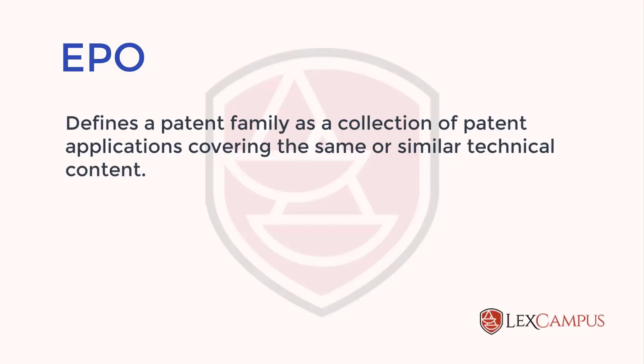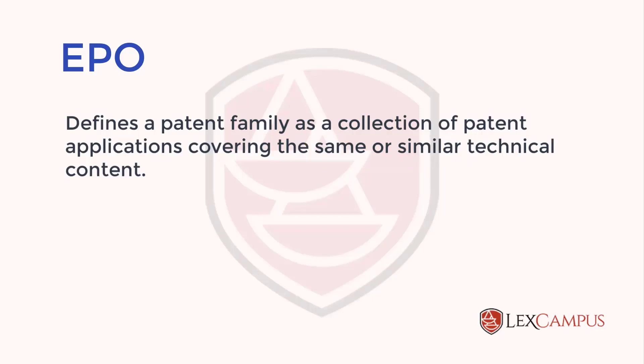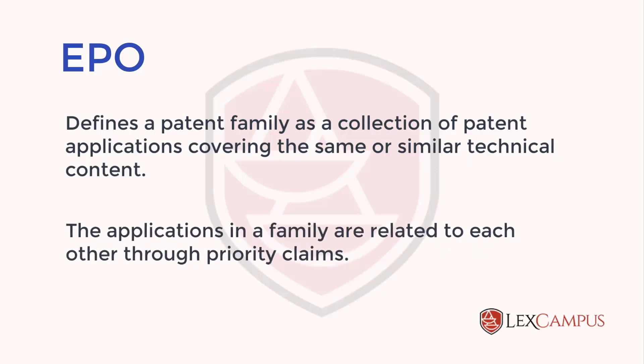The EPO says that patents are related through their technical content, and the applications in a family are related to each other through priority claims. So these are the two criteria: one, they relate to the same or similar technical content; two, they are related to each other through priority claims, meaning they have the same or shared priority.